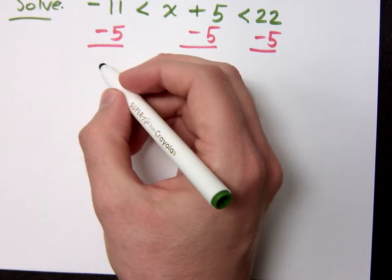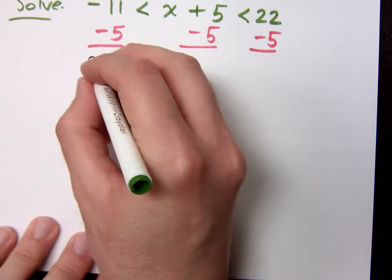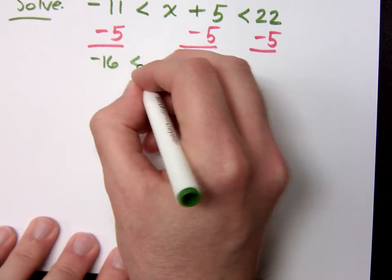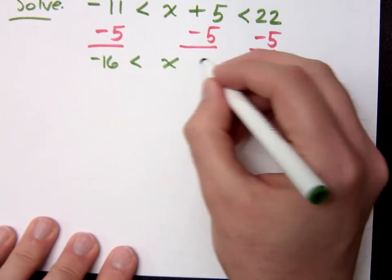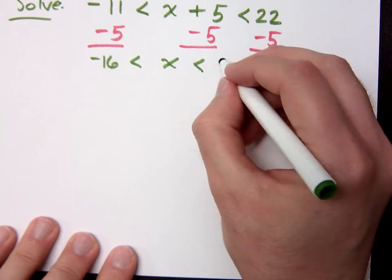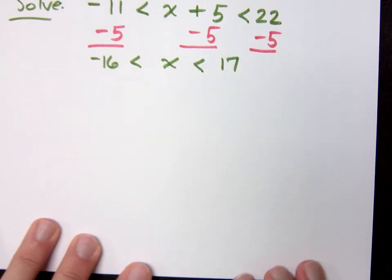So what do we have here? Negative 16. Negative 16 is less than x which is less than what? 17. 17. Okay.